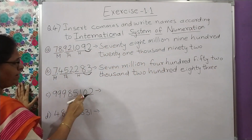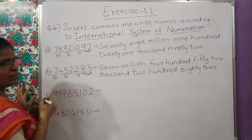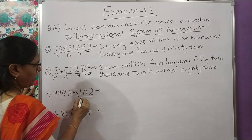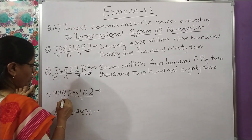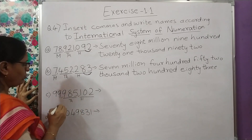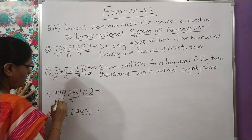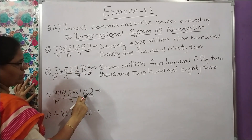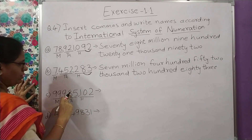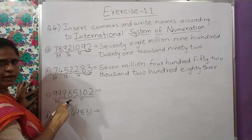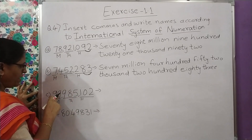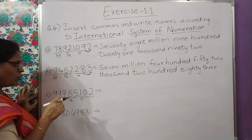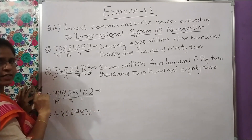Ab next wala. Same pattern — one, two, three ke baad comma, phir one, two, three ke baad comma. Hundred, thousand, million. International system mein: one, ten, hundred, thousand, ten thousand, hundred thousand — teeno thousand mein aate hain. Phir ten million, hundred million — direct million likhenge. Shortcut method se kar rahe hain.